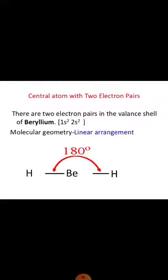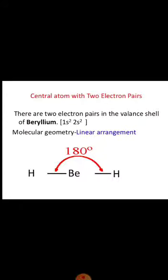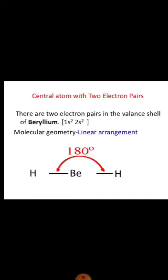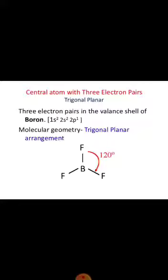If we look at a molecule which has two electron pairs — for example, beryllium difluoride — it has a linear geometry. For a central atom where three electron pairs have formed, like BF3, boron is the central atom surrounded by three fluorine atoms. We arrange them so that we have maximum distance and minimum repulsion, giving a trigonal planar geometry.